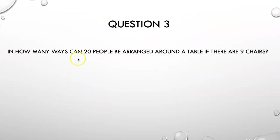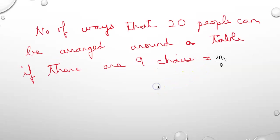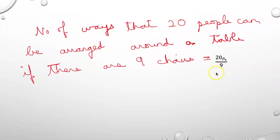Question 3: In how many ways can 20 people be arranged around a table if there are only 9 chairs? Here the clockwise and counterclockwise arrangements are considered different, so the answer is nPr divided by r, that is 20P9 divided by 9.